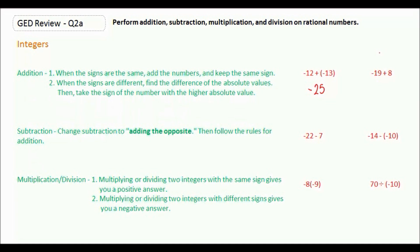So the absolute value of negative 19 will be 19, the absolute value of 8 would be 8, so you're going to subtract those two numbers to get 11. And this one has the higher absolute value, so you're going to take the negative sign. So negative 19 plus 8 is negative 11.